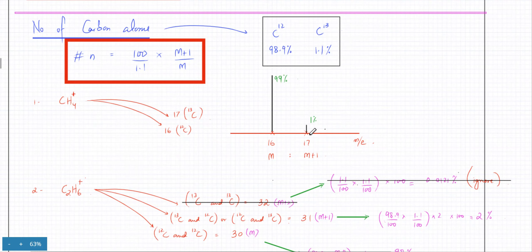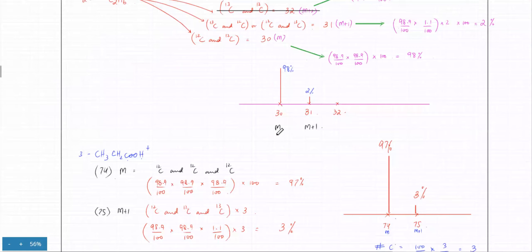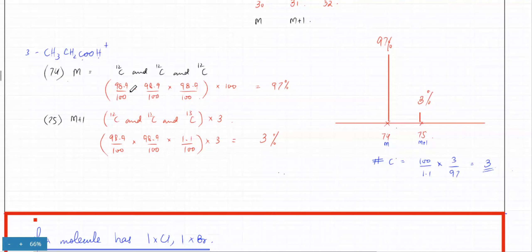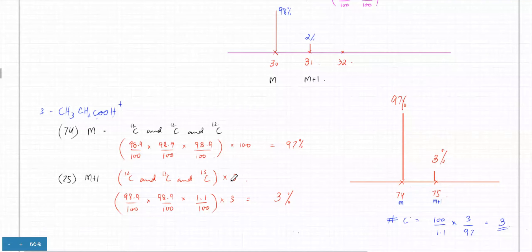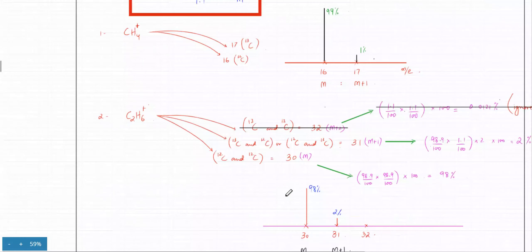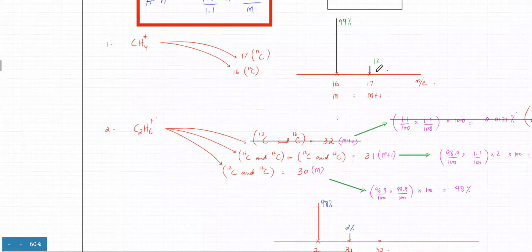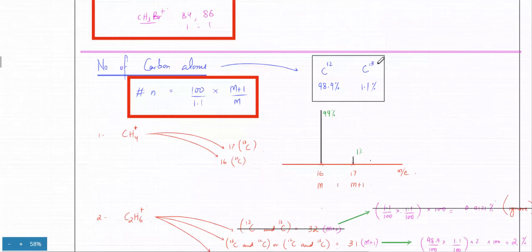Most particles will give the M peak at mass 16, and we extended this probability to two and then three carbon atoms. If a molecule has three carbon atoms, having all of them as carbon-12 gives a probability of 99 × 99 × 99, which is approximately 97%. So as the number of carbons increases, the chances of the M peak decrease, and the M+1 peak — where one carbon is C-13 — increases. The ratio was 99:1.